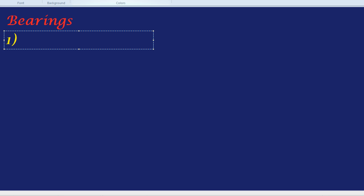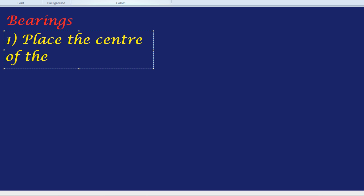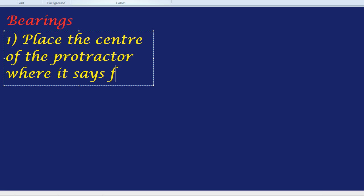Step one in bearings is you place the center of the protractor where it says from. What do you mean where it says from? If we're measuring town B, for example, from town A, we place the center of our protractor at town A.